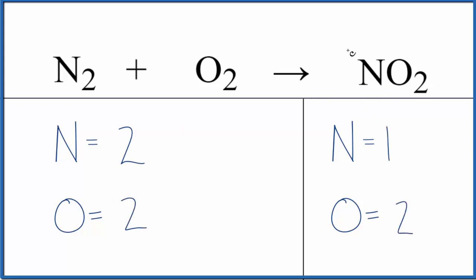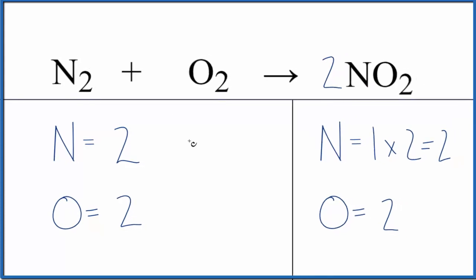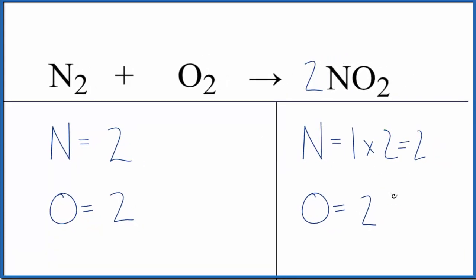Looks like if we put a 2 in front of the NO2, one times two gives us two of those. But the oxygens, two times two, that'll give us four oxygen atoms.